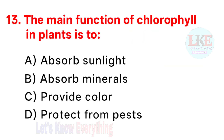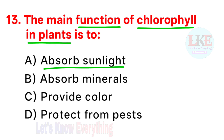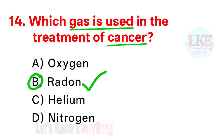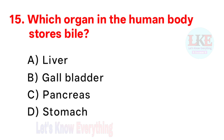Question number 13: the main function of chlorophyll in plants is to absorb sunlight. Question number 14: which gas is used in the treatment of cancer? Right answer option B: radon. Question number 15: which organ in the human body stores bile? Right answer option B: gallbladder.